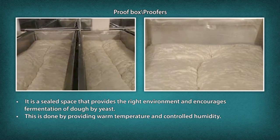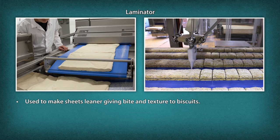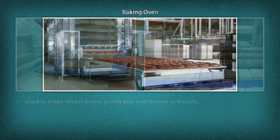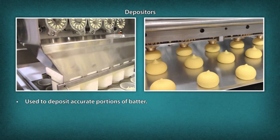Laminator: It is used to make sheets leaner, giving bite and texture to biscuits. Depending on the orientation, laminators are classified as vertical and horizontal. Baking Oven: It is used to bake or roast food in an enclosed compartment or receptacle. Depositors: It is used to deposit accurate portions of batter.